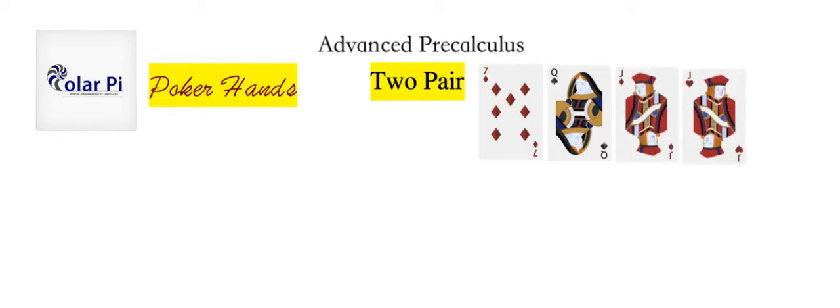Now, let's look at what two pair could look like. So, you're dealt a seven, and then a queen, and then a jack. What? Where's a two pair? Then you're dealt another jack, and then you river your two pair. Right there.